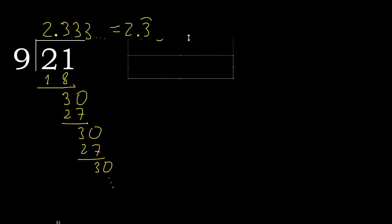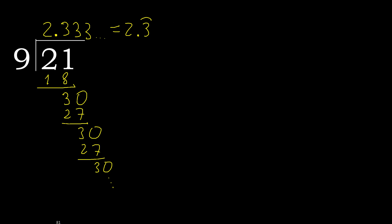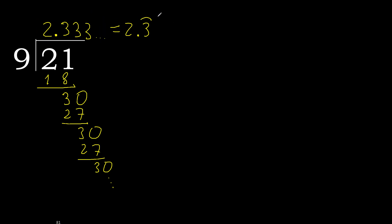Therefore 21 divided by 9 is 2.333... — or written here. 21 divided by 9 is here.